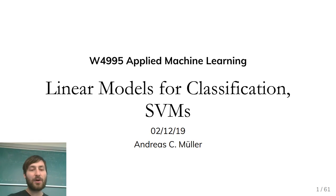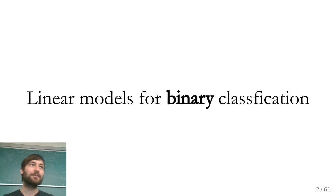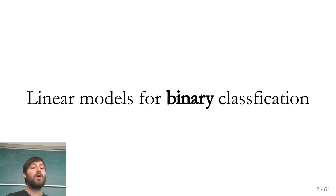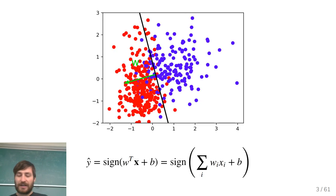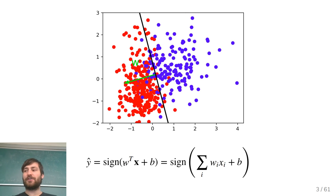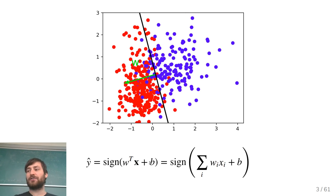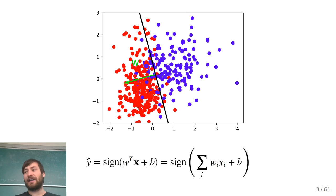Let's get started with linear models for binary classification. These are, in a sense, quite similar to linear models for regression. They all have the same form: you have your feature representation X, some coefficients W — one coefficient for each feature — and some bias or offset B. Instead of having a regression response, which is just W transpose X plus B, for classification we look at the sign of this expression — whether it's positive or negative. If it's positive, we say it's class 1; if it's negative, we say it's class minus 1.